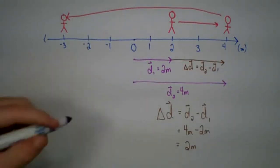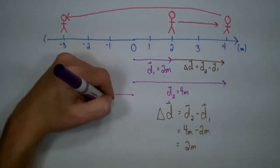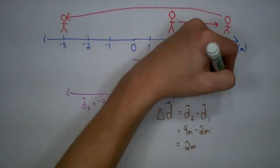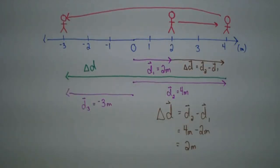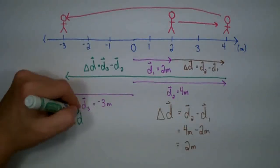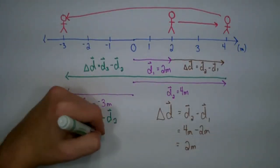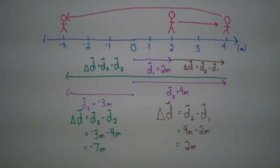Now our person gets bored and they walk to the position three meters to the left. So now we have d3, still based on zero — d3 is equal to negative three meters. If we want to look at the change in position, the displacement, we need to go from where they were to where they are now. Delta d extends all the way from four meters over to negative three meters. So delta d is d3 minus d2, which is negative three meters minus four meters, giving us negative seven meters as the displacement — seven meters to the left.